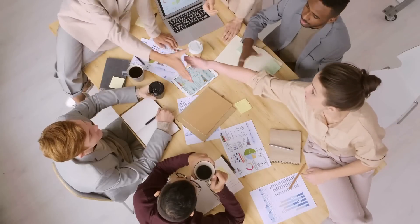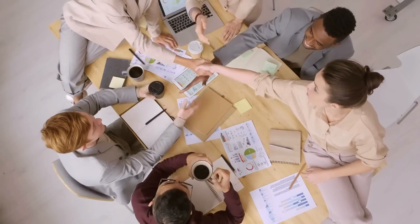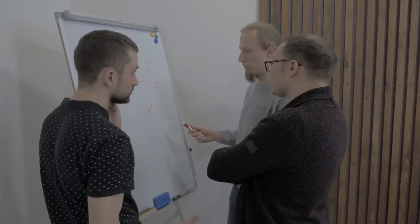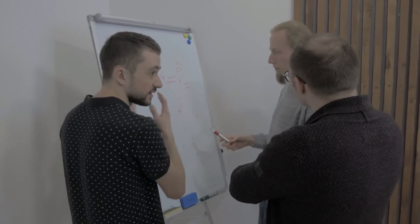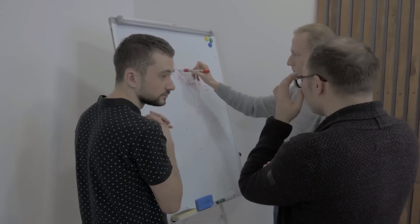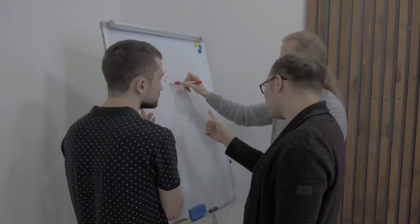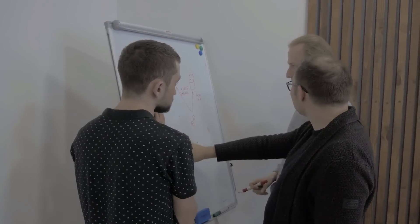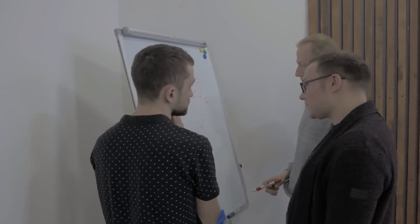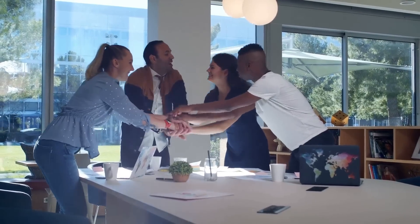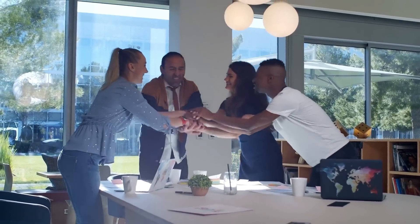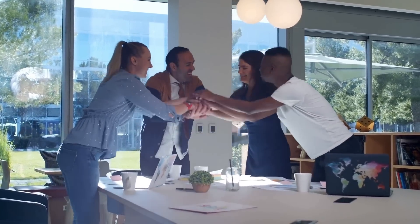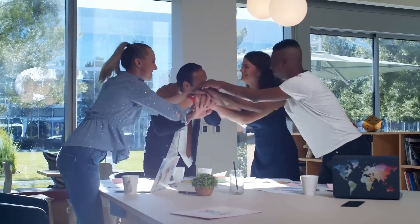Step 5: Build Your Team. Your team is a critical component of your business. You need to build a team that can help you achieve your business objectives. Hire individuals who have the skills and expertise you need to run your business successfully. For example, if you want to start a software development company, you need to hire individuals with programming skills, marketing skills, and project management skills.